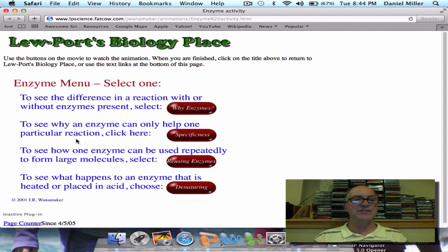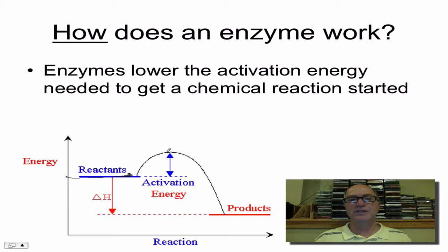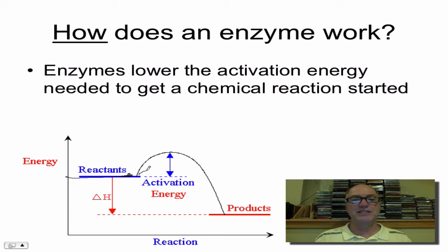So how does an enzyme work? Enzymes lower the activation energy needed to get the chemical reaction started. The reactants have a certain level of energy, and it takes a little addition of energy — either through heat or something else — to increase the energy available to break some bonds in the reactants, and then they react to form products, which typically have less energy than the reactants did. The amount of energy it takes to start this reaction is called activation energy. An enzyme, by stressing bonds at the active site, can actually lower the amount of activation energy needed, so it takes less energy to kick the reaction into gear and more reactants can turn to products easily.